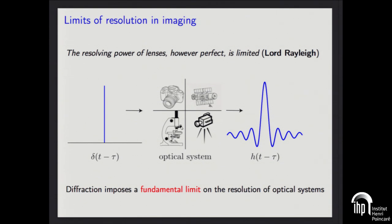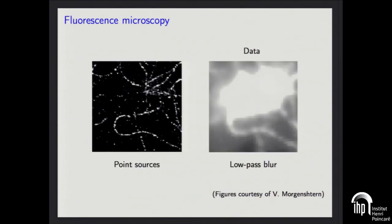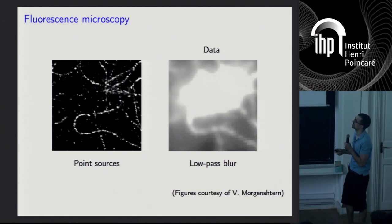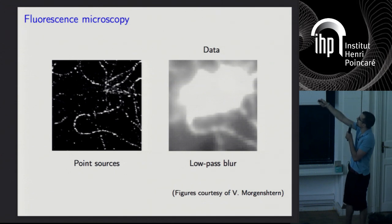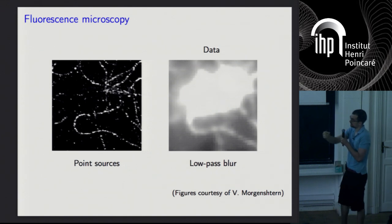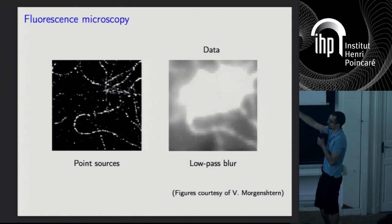Another motivation is imaging. Whenever you have an optical system taking an image of something, the resolution is limited fundamentally by diffraction. This happens in fluorescence microscopy, where many pictures of fluorescent probes within a cell are taken — probes that are supposed to be just point sources, but because of the microscope you see blurry points. If you put all those images together without processing, you see basically nothing. However, if you manage to deconvolve each of these points and put them together, you get to see very fine structure in the cell.